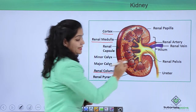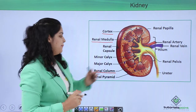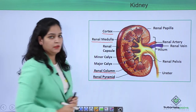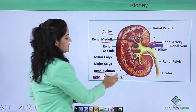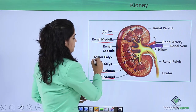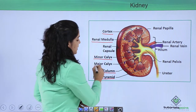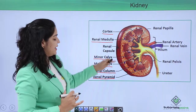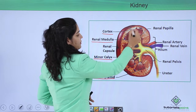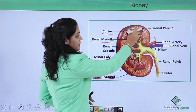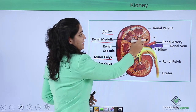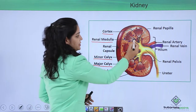The pyramidal structures are divided into different pyramids called renal pyramids. These renal pyramids narrow and end at the renal papillae. The renal medulla has a striated structure containing different pyramids which terminate at the renal papillae.